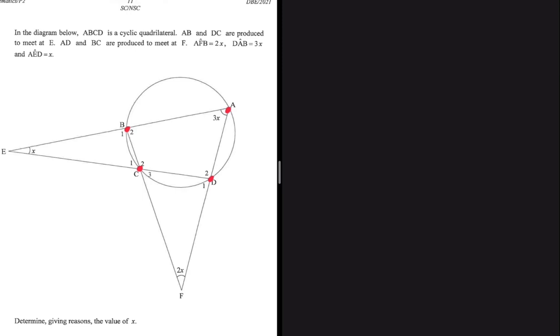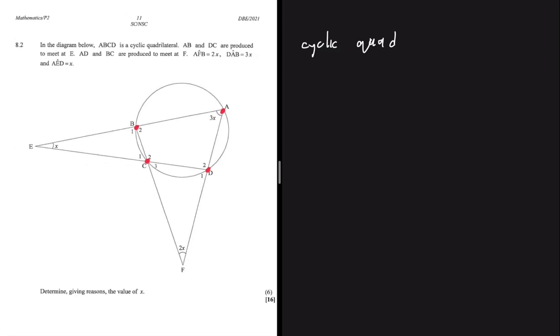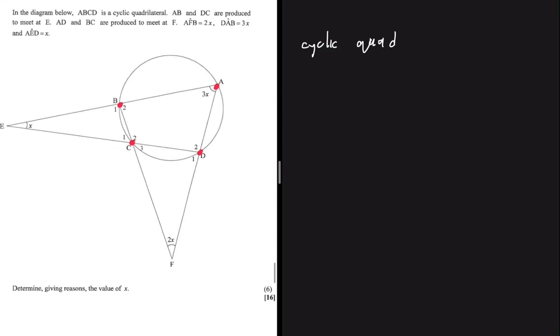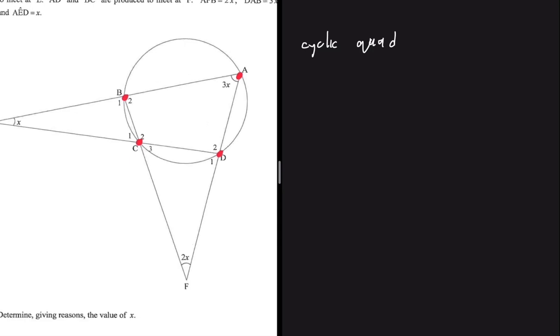We stick to the keywords and nothing else. Let's go ahead and see what we can do here. The question is asking to determine, giving reasons, the value of x. Let's see how the cyclic quadrilateral can help us with that.